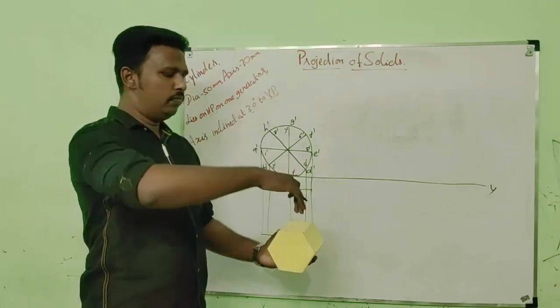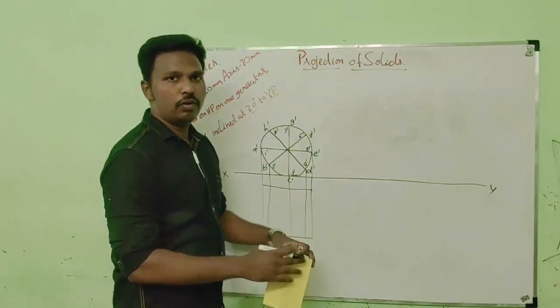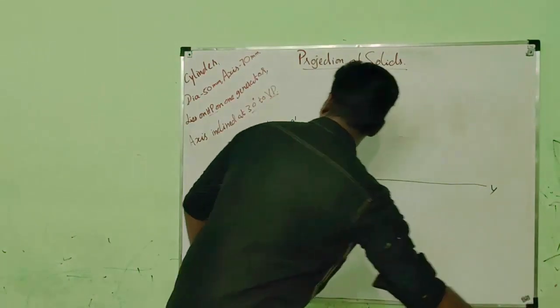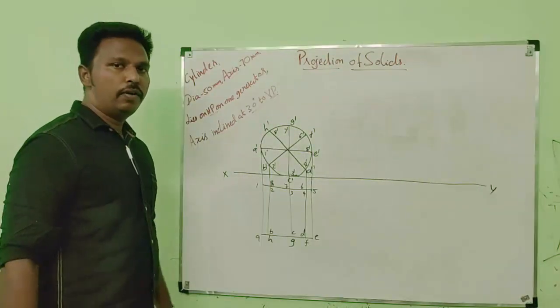If you see from the top, the bottom face is A, B, C, D and the top face is 1234. Now we have named all the points.